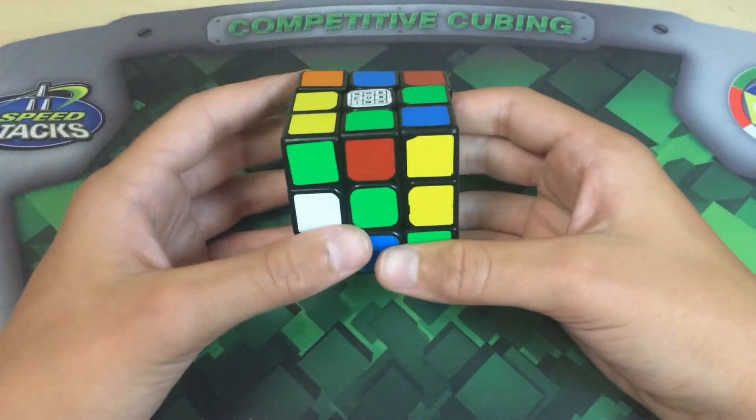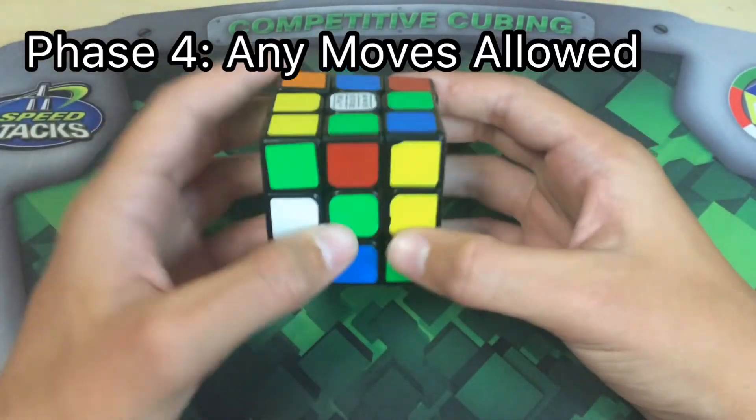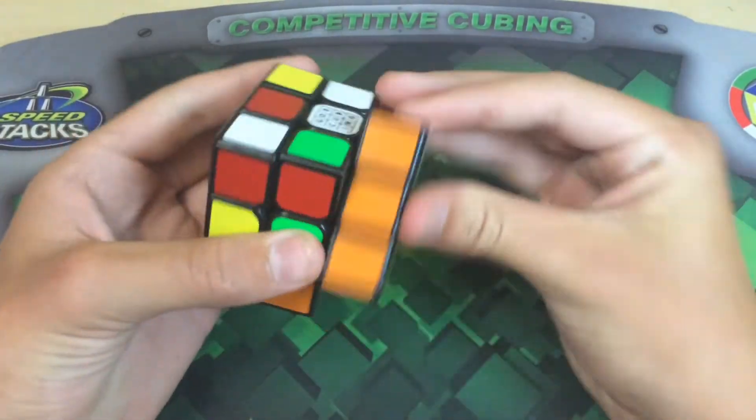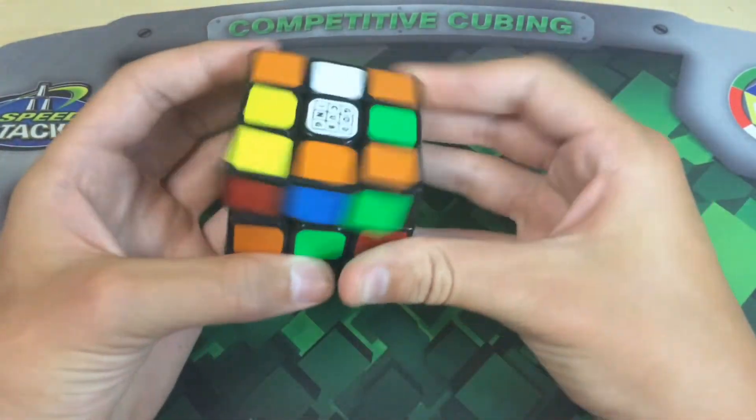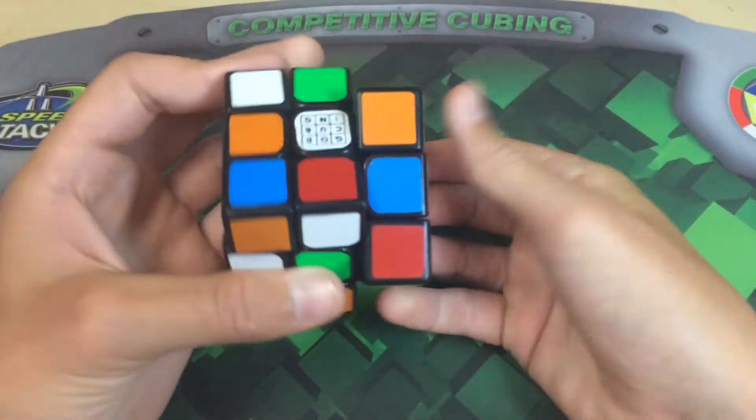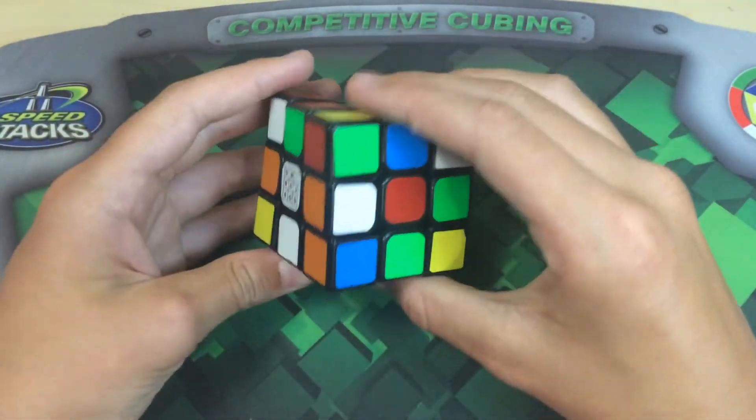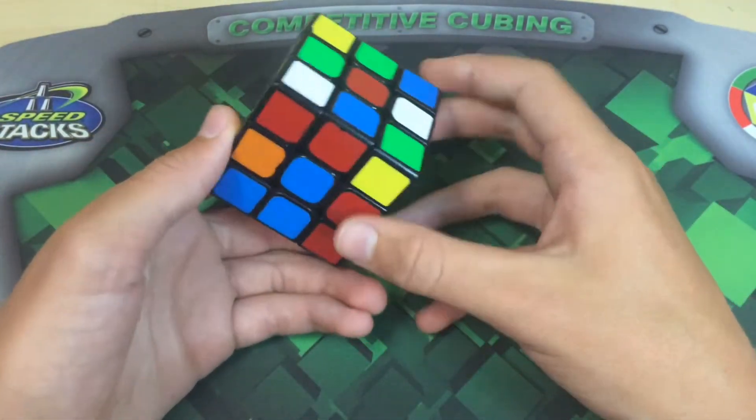And then in the final step, we're allowed to do single moves on all the sides. So this is the step where you want to make sure that you're using F and B moves, so that you get some bad edges. And then you should get a cube that looks quite scrambled.